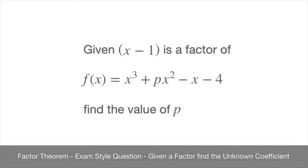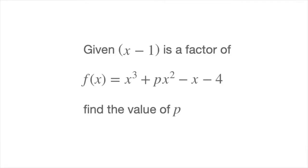In this tutorial, we learn how to solve a typical exam-type question involving the factor theorem for polynomials. We're going to work through two examples. The first is the one we see here: we're given that x minus 1 is a factor of the polynomial f of x, which equals x cubed plus px squared minus x minus 4, and we are asked to find the value of p.